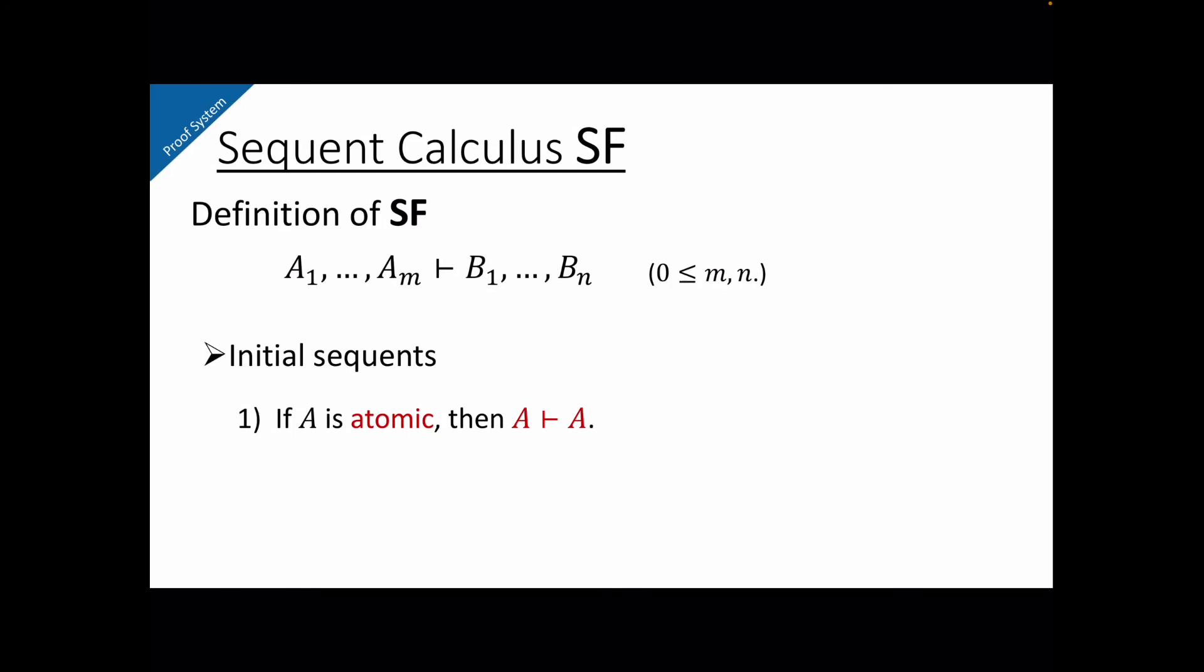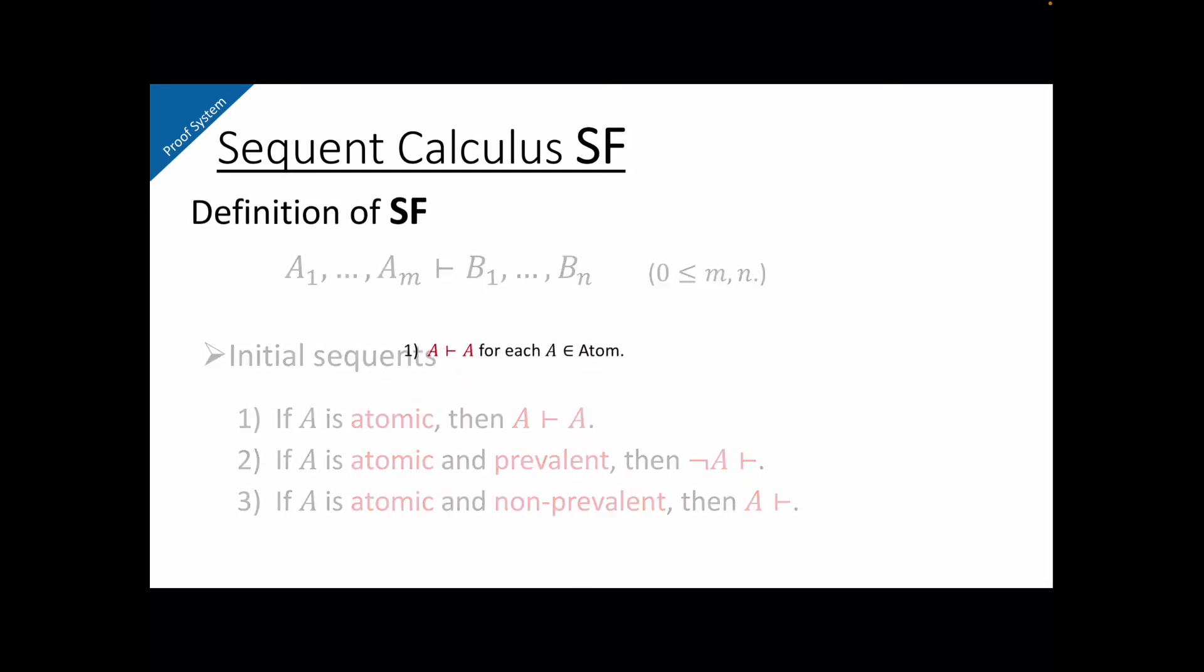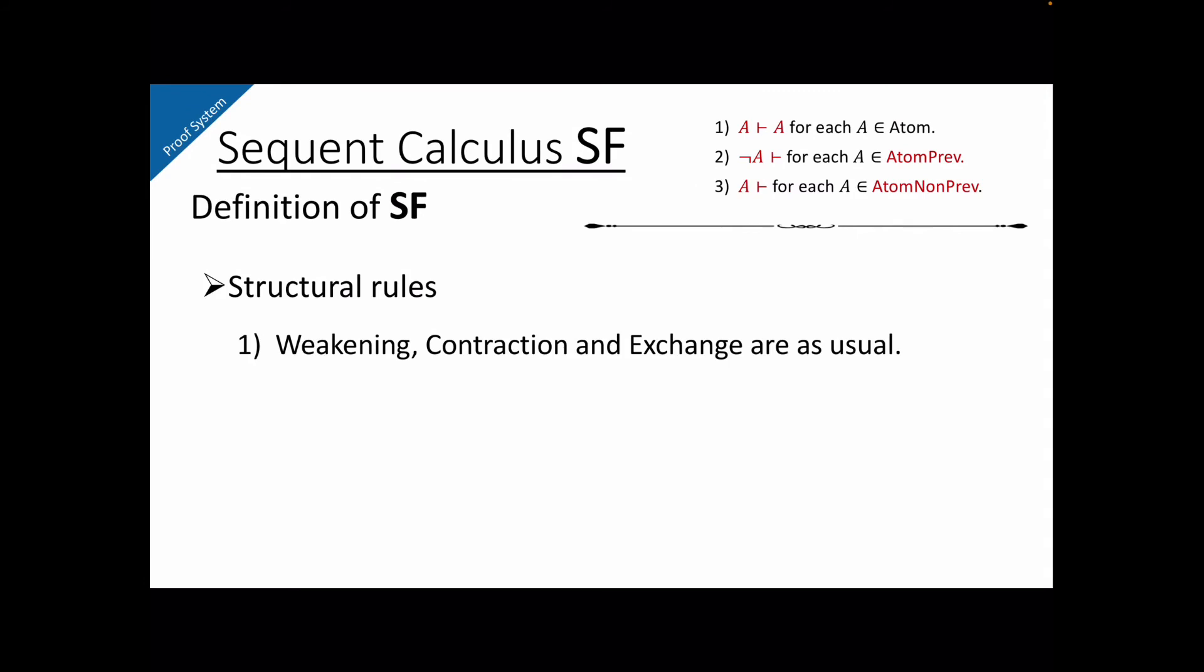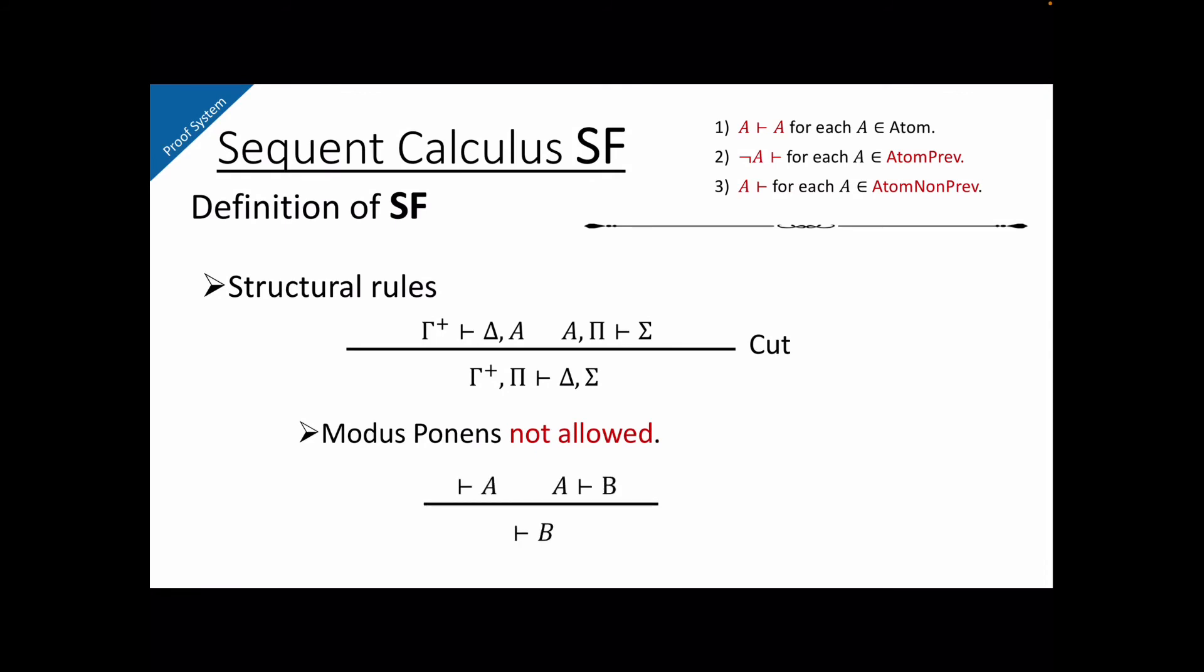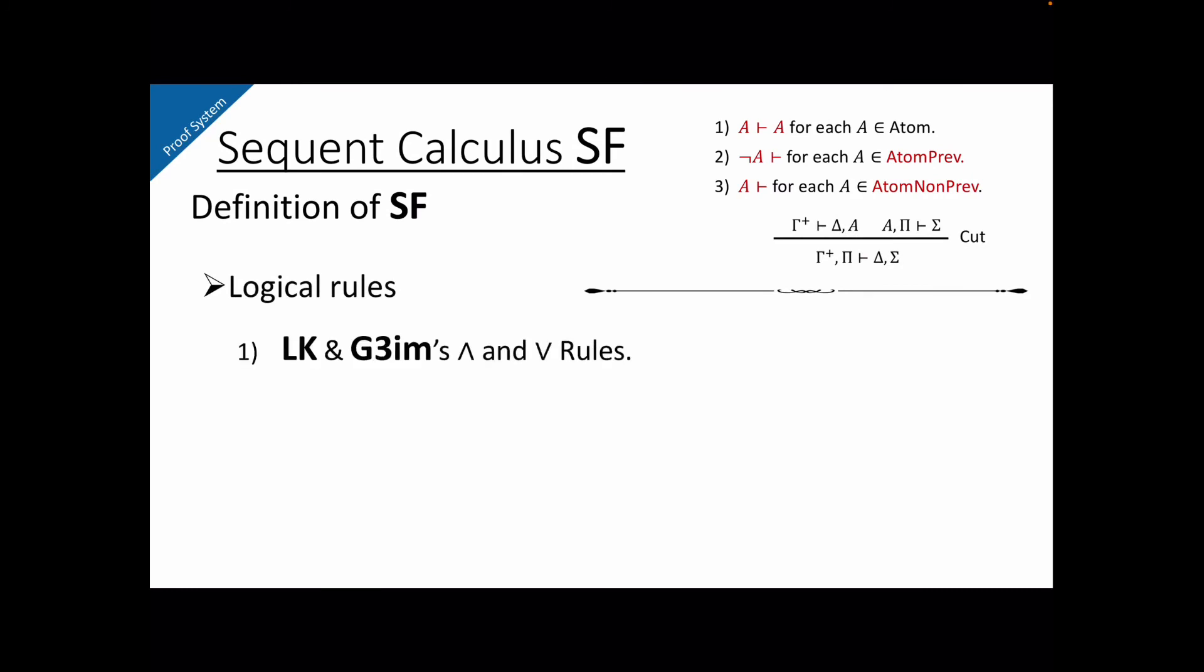As usual, if A is atomic, then A turnstile A is an initial sequent. But if A is atomic and not prevalent, then A turnstile bottom is an initial sequent. SF has weakening, contraction and exchange as usual. But the cut rule of this system is in this form. This is classical cut, but the context can't be empty. This means that in this system, modus ponens of this form is not allowed. I think this is a very salient feature.